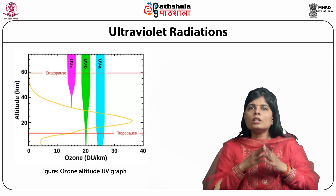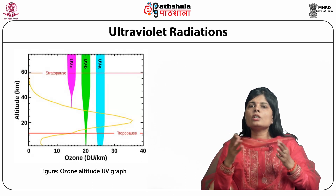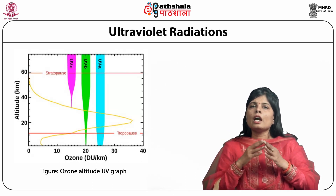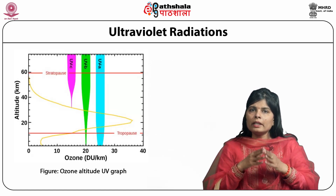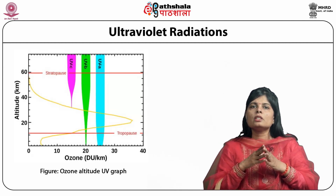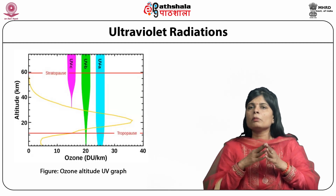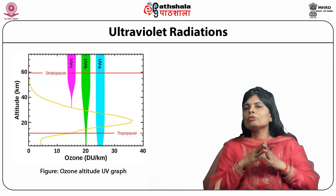UVB initiates photoisomerization of trans-urocanic acid. The trans-urocanic acid converts to cis-urocanic acid, which acts as a mediator for the generation of reactive oxygen species and photoimmunosuppression. UVA penetrates deep into the dermis and generates reactive oxygen species by damaging membrane lipids and amino acids. The damaged membrane results in the release of arachidonic acid, which gives rise to free radicals.